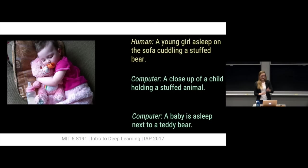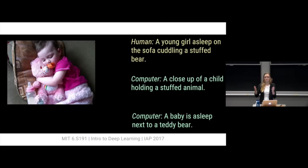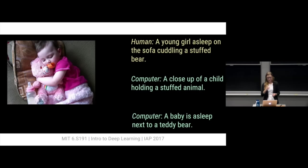Here's an example: we have an image fed into the model, and a human labeled it 'a young girl asleep on the sofa cuddling a stuffed bear.' The computer generated two captions — you can sample the space and get different captions for the same image. The computer says 'a close-up of a child holding a stuffed animal' and 'a baby is asleep next to a teddy bear.' This is impressive because the model learned both the objects and the relations between them.